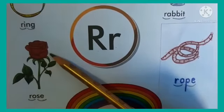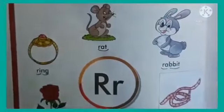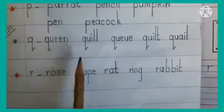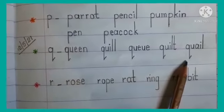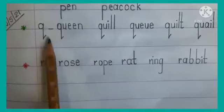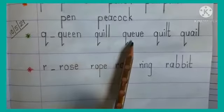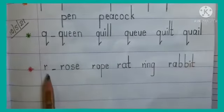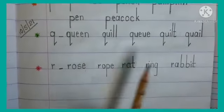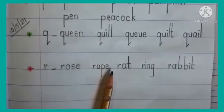Toh aap log ab in sab words ko sundar se apne school wali copy mein likhenge aur dhyan denge ki jab aap Q likhenge toh Q ka danda sundar se neeche jaana chahiye, aur baaki letters equal hone chahiye. Q se humein mila: queen, quill, queue, quilt, quail. R se humein mila: rose, rope, rat, ring, rabbit. Inko sundar se hum likhenge aur spelling ke saath learn kar lenge.